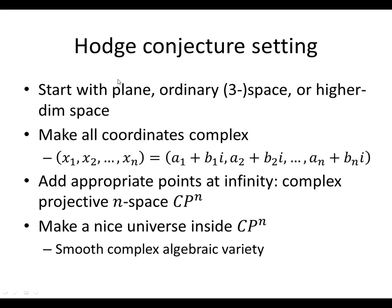Here's the setting for the Hodge Conjecture. Start with the plane like we did at the very start, or start with ordinary three-dimensional space, or a higher-dimensional space. Then make all your coordinates complex — instead of x1 being a real variable, it's going to be a1 plus b1·i, and x2 is going to be a2 plus b2·i, etc. So now you've got 2n real variables coming in, paired in terms of n complex numbers. Then we add appropriate points at infinity — just like with the projective plane we had to add a line at infinity — to make complex projective n-dimensional space, called CP^N: complex projective n-space.